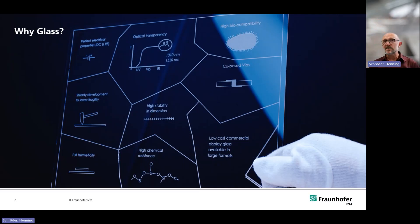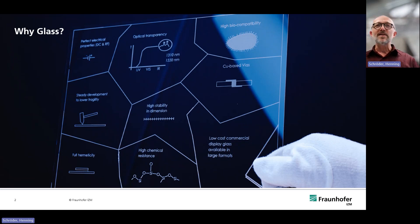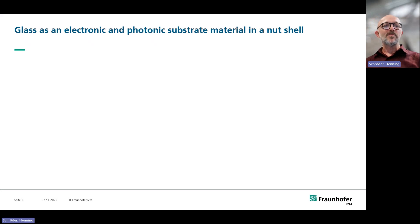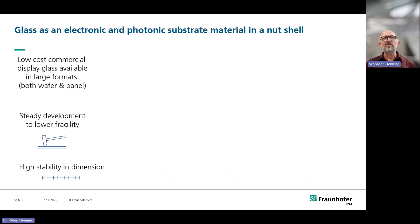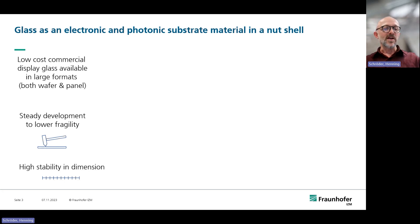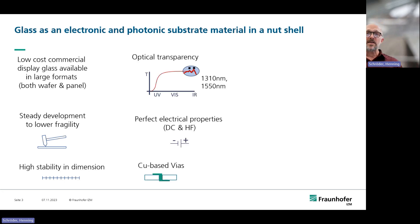Why glass? We use panels and sheets of very thin glass. To warm up, here are the nice properties. First, glass is a low-cost commercial material — we use display material and can process it on panel and wafer level. It is under development as a very stable, low-fragile material with high dimensional stability, which is very useful for photonic and electronic assembly.